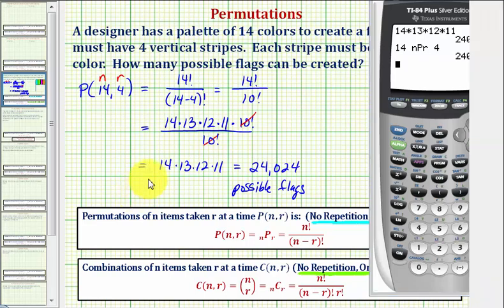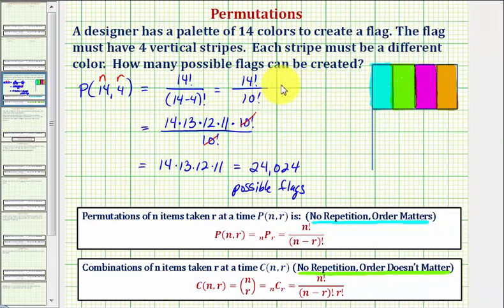Let's also talk about a second way to answer this question using the counting principle. If we viewed selecting the four colors for the stripes as four separate events, we could use the counting principle to find the same result. So to model the counting principle, we would use four vertical bars to represent the four events.